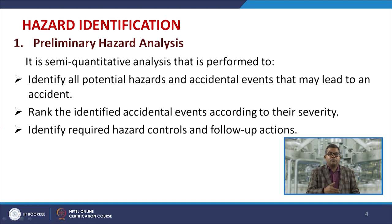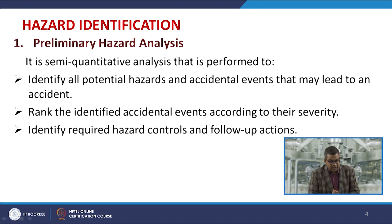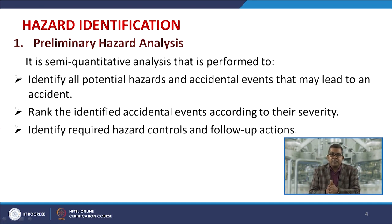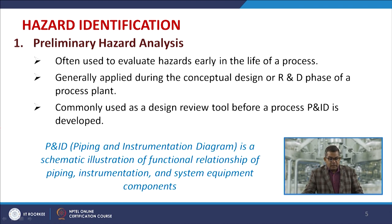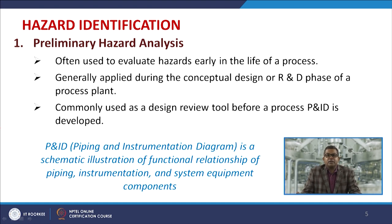Let us look at the first aspect: preliminary hazard analysis. This is a semi-quantitative analysis performed to identify all potential hazards and accidental events that may lead to an accident. You need to identify all those things, rank the accidental events according to their severity, and identify the required hazard controls and follow-up actions. They are used to evaluate hazards early in the life of a process, generally applied during the conceptual design or R&D phase.